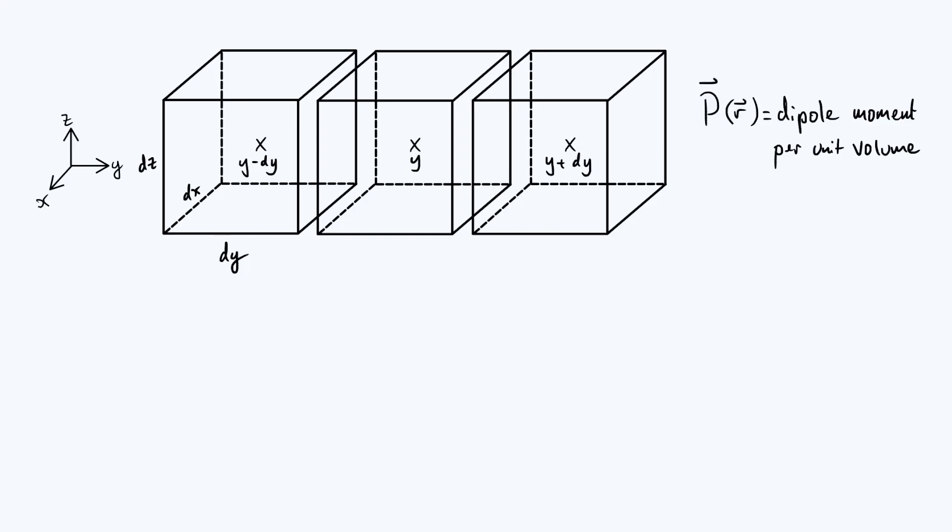The effect of the polarization is going to be to induce charges on the surface of each of these cuboids. Because the polarization is in an arbitrary direction, each of those six faces could in general have some charge on it and we want to come up with labels for those charges so that we can start thinking about the volume density of charge overall.